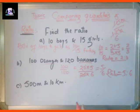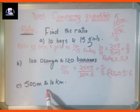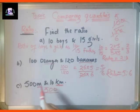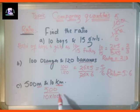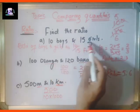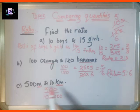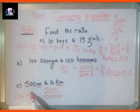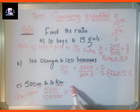Now consider 500 meters and 10 kilometers. Since the units are different — meters and kilometers — we need to convert. We know that 1 kilometer equals 1000 meters, so 10 kilometers equals 10,000 meters. So we get 500 meters to 10,000 meters.